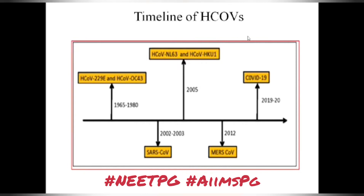The timeline of human coronaviruses shows that from 1965 to 1980, those two endemic strains were prevalent. Then in 2002 to 2003, SARS coronavirus emerged. In 2005, human coronavirus NL63 and human coronavirus HKU1 emerged — NL stands for Netherlands and HKU1 for Hong Kong, where they were isolated. Then in 2012, MERS coronavirus emerged, mostly in Saudi Arabia. And in 2019 to 2020 came COVID-19, which is the novel SARS coronavirus 2.